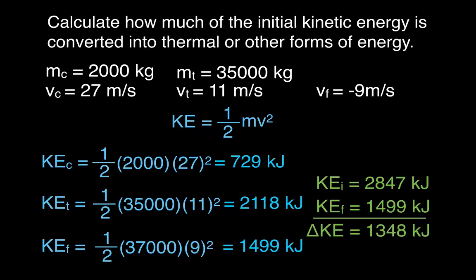That was a relatively straightforward example. We found the final velocity and the energy lost by comparing kinetic energy before and after. The most important thing to remember is that the truck is traveling in the opposite direction, so its velocity is negative when setting up the conservation of momentum equation.